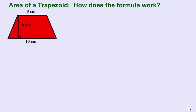How do we come up with a formula to find the area of the trapezoid? We have a trapezoid with a base of 8 centimeters, a base of 10 centimeters, and a height of 6 centimeters.